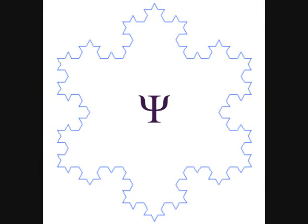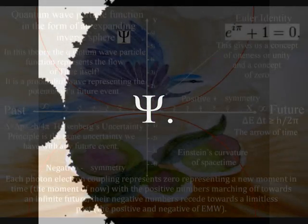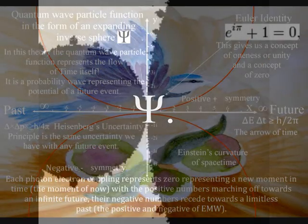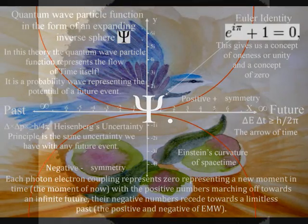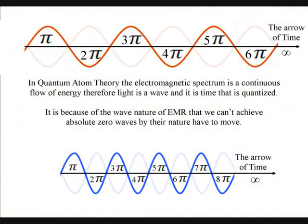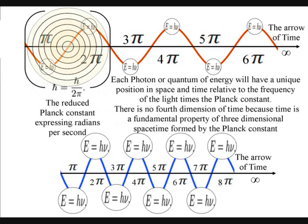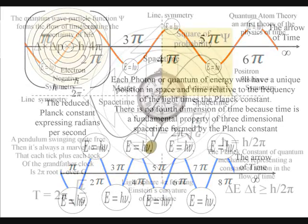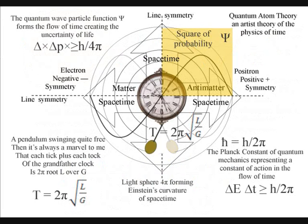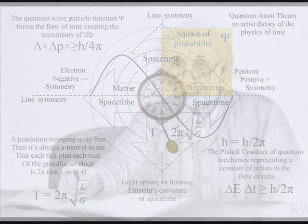It is this dynamic universal geometry that human mathematics is based upon. In this theory, fractals are formed by the repetition of the wave function continuously collapsing and reforming — a kind of geometrical and mathematical repetition. This has gauge symmetry, and we can re-gauge each new photon at zero, representing a new moment in time — the moment of now — with positive numbers marching off towards an infinite future and negative numbers receding towards the limitless past, like the positive and negative of electromagnetic waves. This gives us a deeper understanding of time and a reason why we have a future and a past.